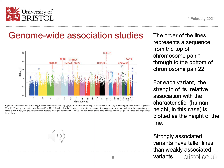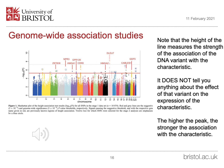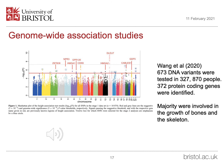Strongly associated variants have taller lines than weakly associated variants. The height of the line measures the strength of the association of the DNA variant with the characteristic — it does not tell you anything about the effect of that variant on the expression of the characteristic, nor does it say anything about the effect on height itself. Those vertical lines which stretch above the horizontal red bar are those that show statistical significance in the analysis.